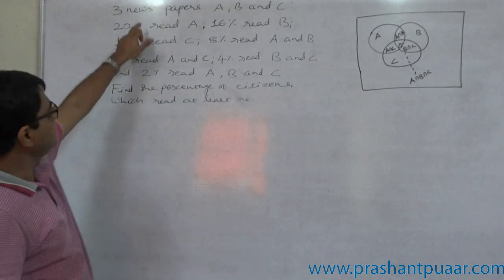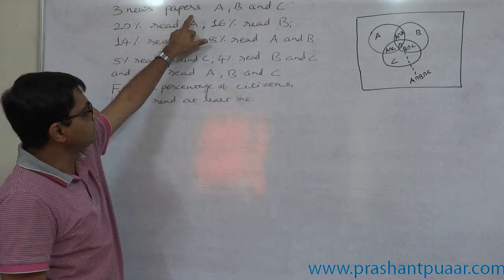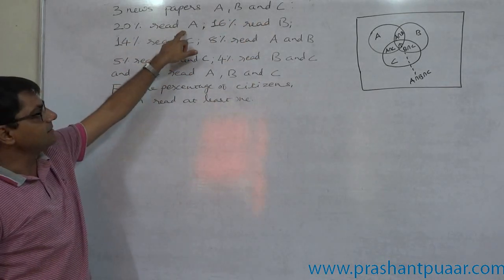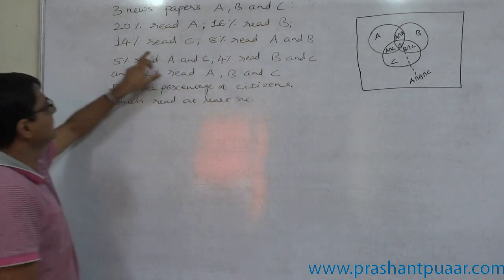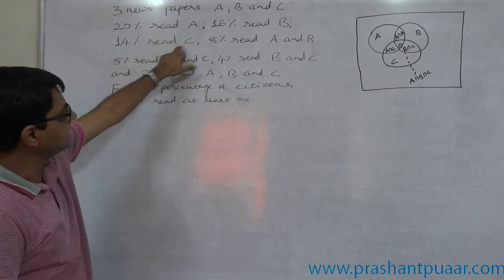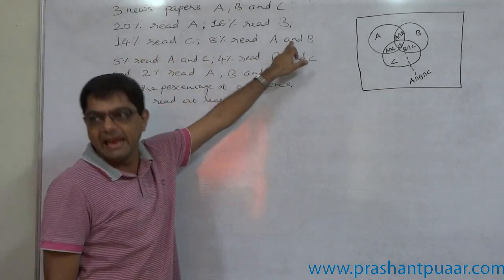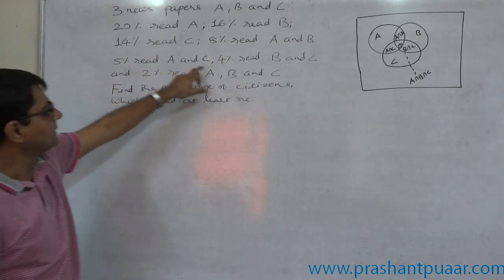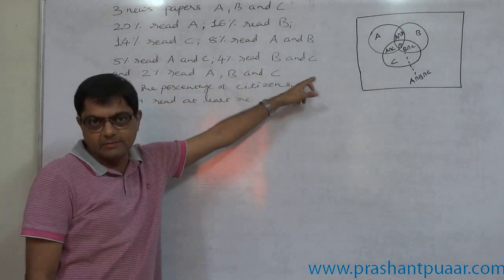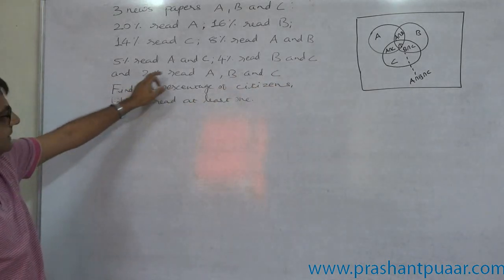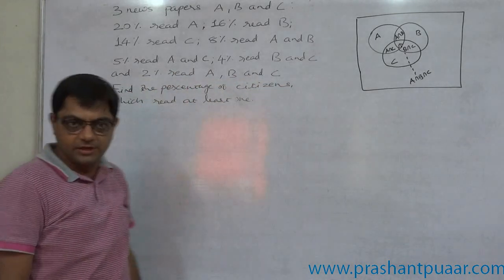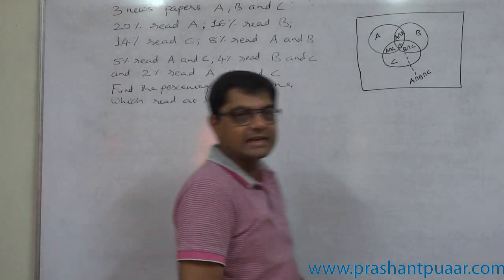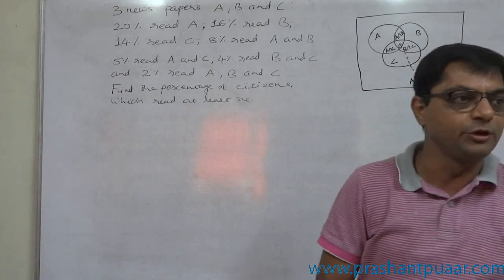The problem is: in any town there are three newspapers published — A, B, and C. 20% read A, 16% read B, 14% read C, 8% read both A and B, 5% read both A and C, 4% read both B and C, and 2% read all three newspapers A, B, and C. Find the percentage of citizens which read at least one newspaper.